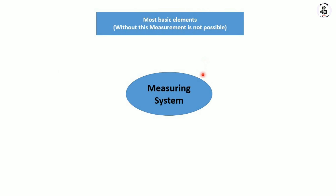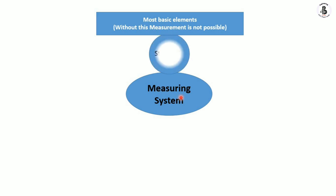Most basic elements are essential — without them, measurement is not possible. These are the most important things in metrology and measuring systems. First is the requirement of standards. For linear measurements there are line standards; for angular measurements there are angular standards. Each and every measurement is made with respect to these reference standards. Without standards there is no meaning to measurements — every reading or measured quantity is taken with respect to a standard value as a reference.